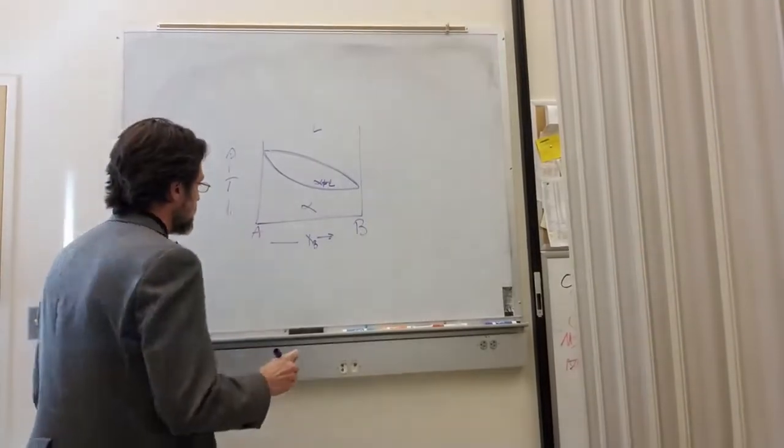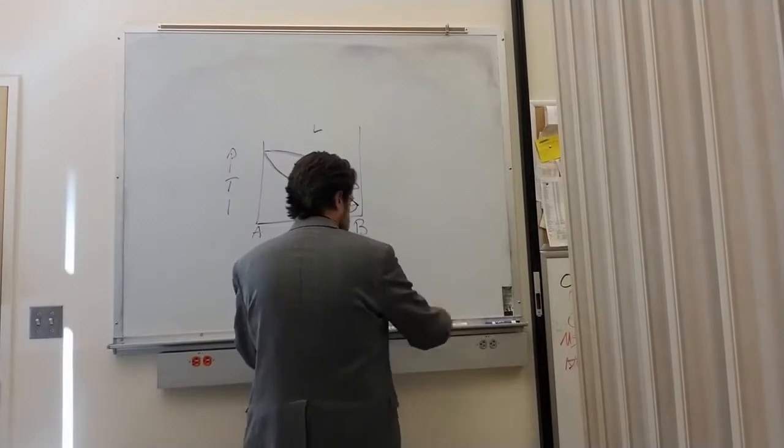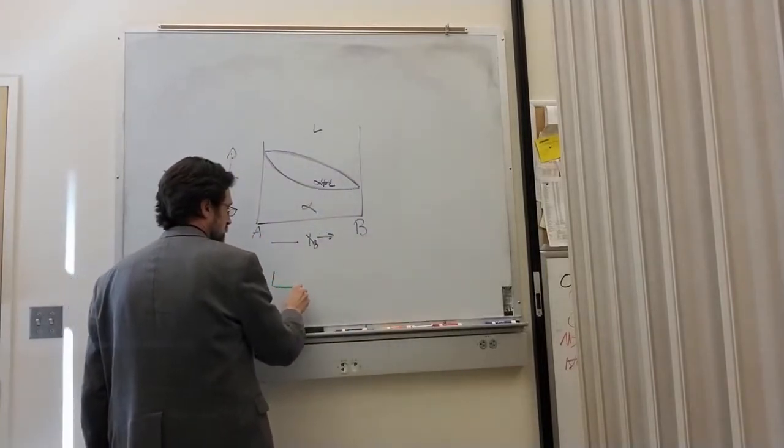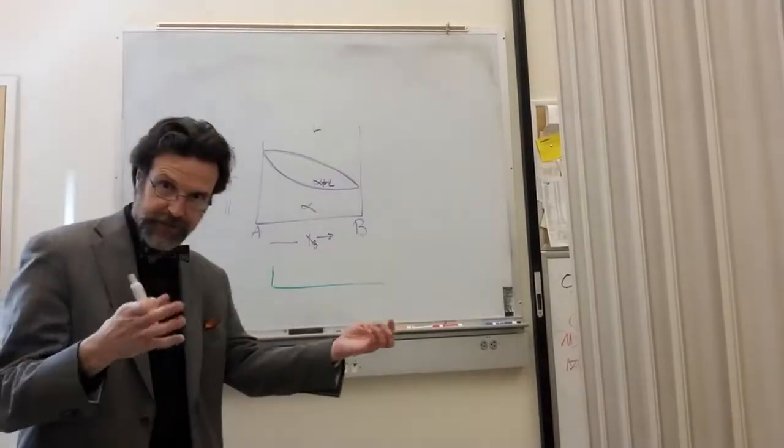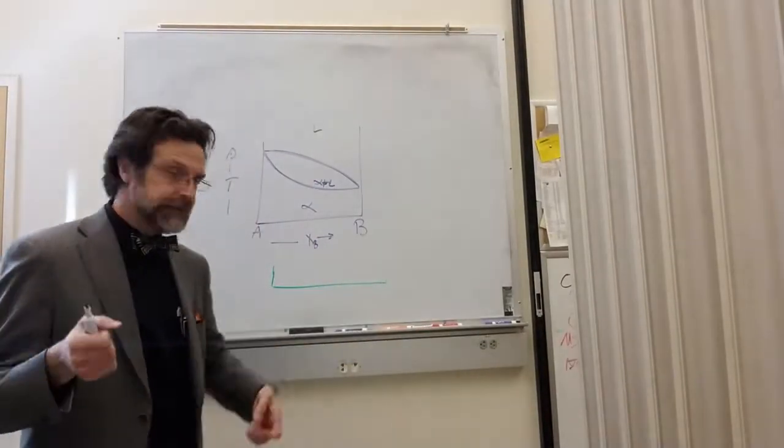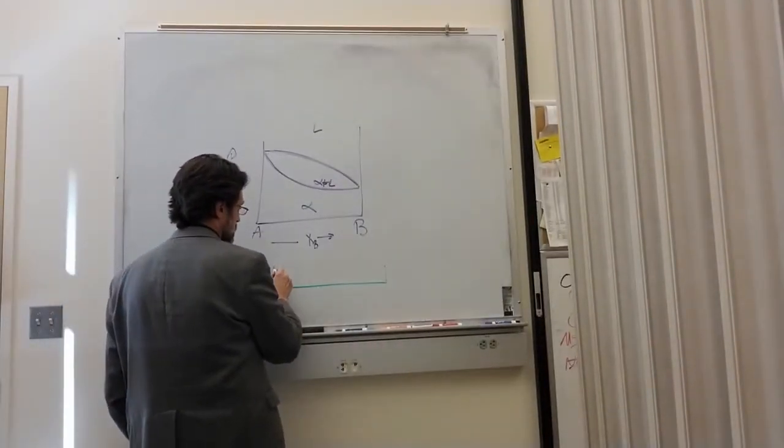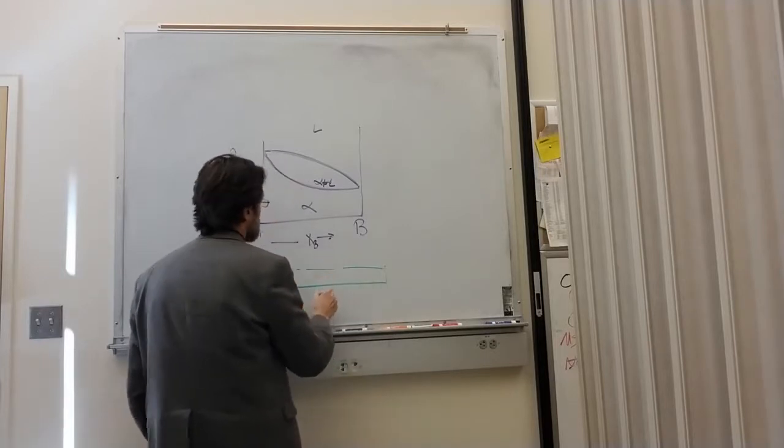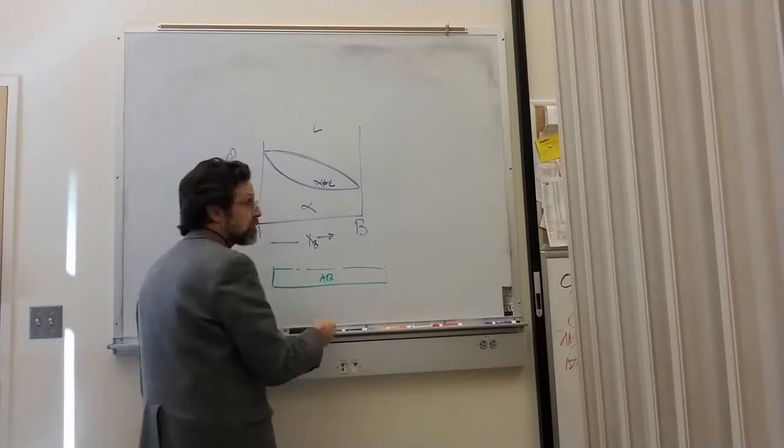So what you can do is you can create a crucible, and these would typically be long rods. And in that crucible, fill it with our mixture, something A-B, and we're going to have it be a liquid.